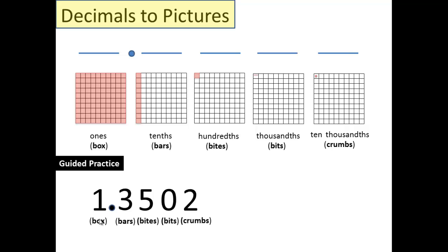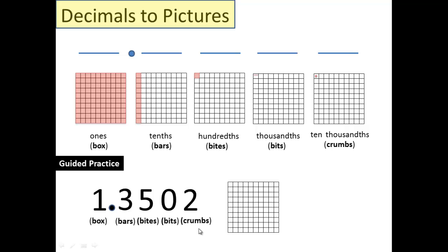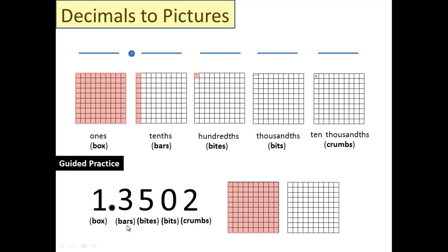All right, if you're back, that must mean you have some stuff filled in. Let's see how yours looks compared to mine. First thing I really like to do is just put all of the different Kipish ways of writing these place names: box, bars, bytes, bits, crumbs. First step you should have done — draw in one box; your entire first box should be shaded in. Next, three bars: 1, 2, 3. How many bytes did you draw? Five. No bits, two crumbs — bam, bam. Ugly, I know, but this is what your picture should look like for 1.3502.